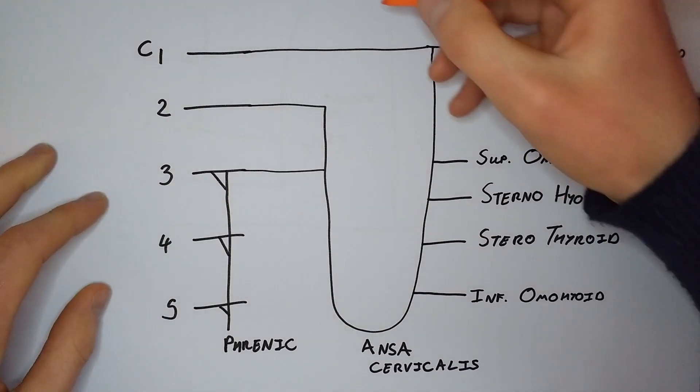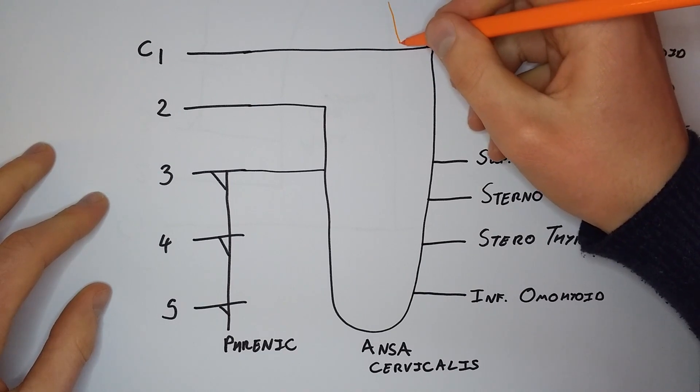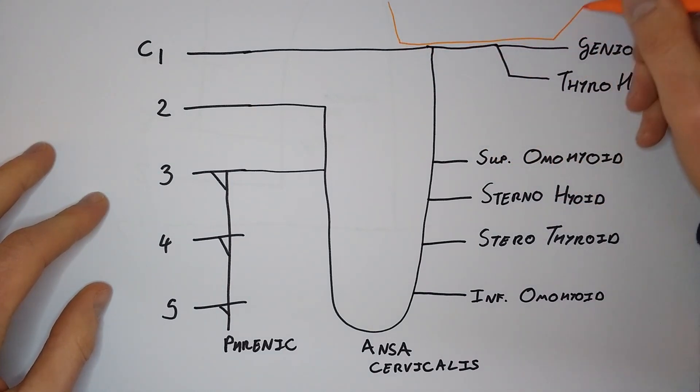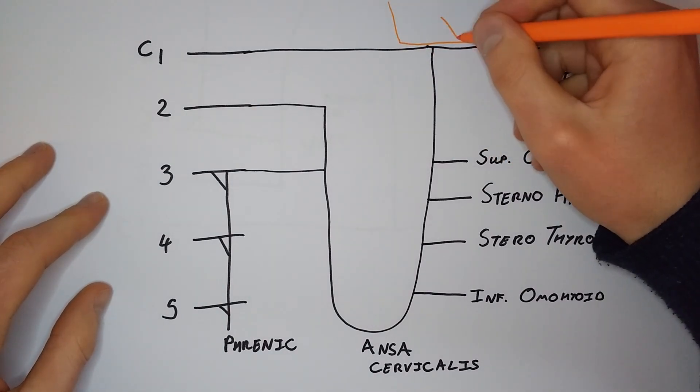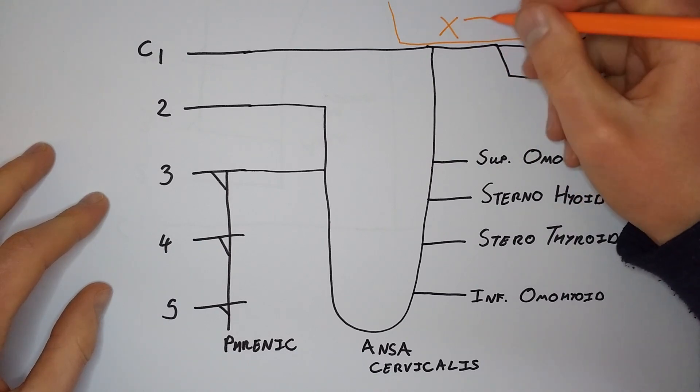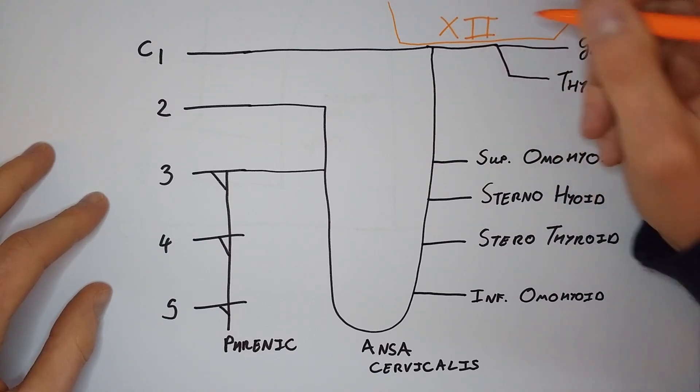Cranial nerve 12 does not communicate, it does not enter the cervical plexus, but the geniohyoid and thyrohyoid both run within its sheath, so we're going to draw it swooping in close and then moving away from the plexus.